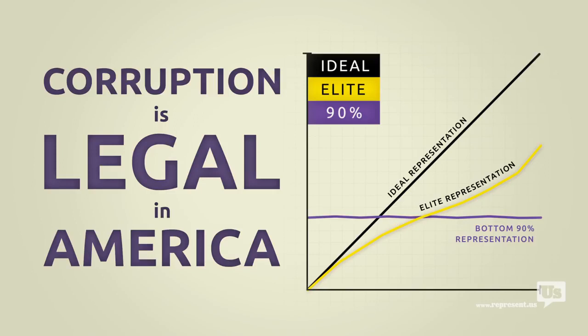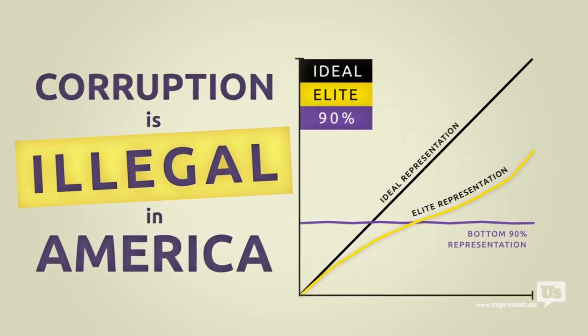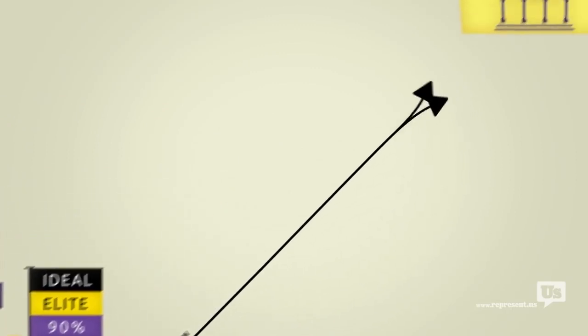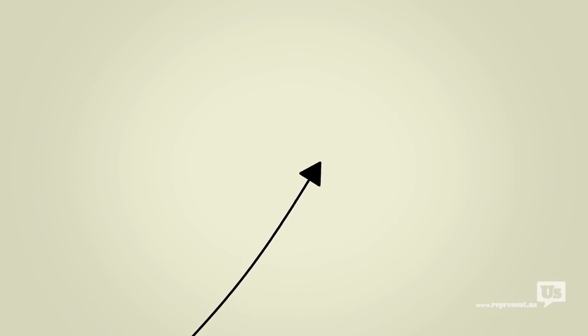The solution here isn't rocket science. Make corruption illegal. We already know Congress won't do it. I mean one look at this chart will tell you that. What we need is a plan that lets us go around Congress and do what the American people do best. Fix this mess ourselves.